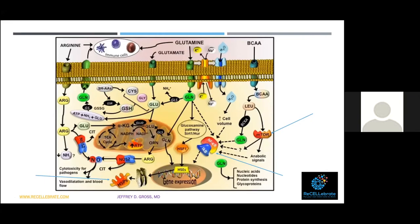Looking at this graphic of complex intracellular activities, NF-κB is at the heart of all this activity as part of the inflammation cascade. Gene expression can also be stimulated to release what are called HSPs — heat shock proteins — seen in the lower left of the diagram. We'll come back to those shortly.